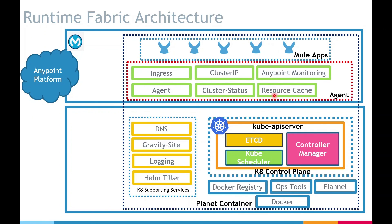But if it is BYOK, you don't have gravity — it's just the Kubernetes components and the agent. Since it's appliance, you as a customer only have to provide the infrastructure. Kubernetes and everything will be installed by MuleSoft using gravity, and on top of gravity MuleSoft has made modifications with which they can install their agent, the Kubernetes components, and eventually we get a runtime fabric. So that's all about the architecture of runtime fabric. I hope this video helped you understand the different flavors of runtime fabric — specifically how BYOK is completely different from the appliance model — and provided a high-level view of the runtime fabric architecture. Thanks for watching.